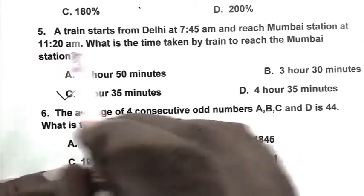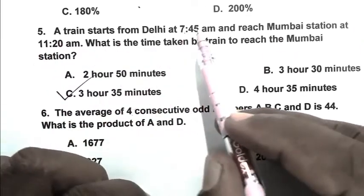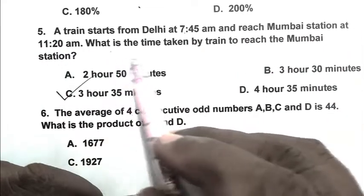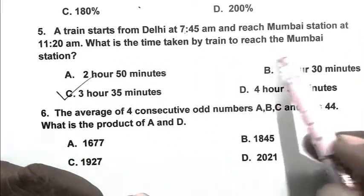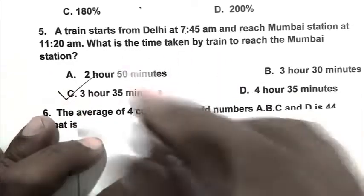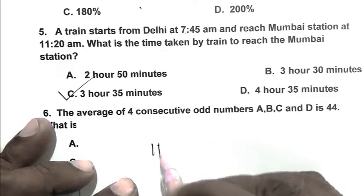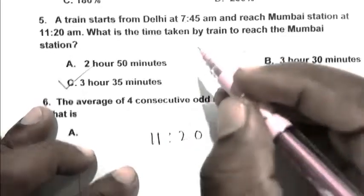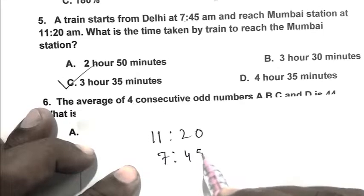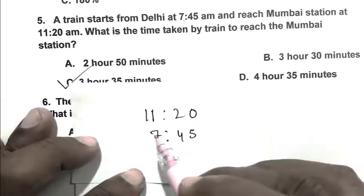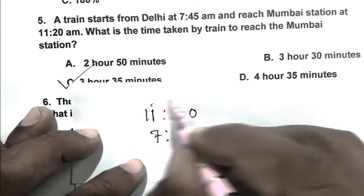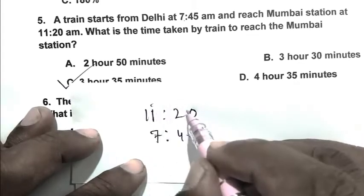Question number 5. A train starts from Delhi at 7:45 AM and reaches Mumbai station at 11:20 AM. What is the time taken by the train to reach Mumbai station? The train reaches Mumbai station at 11:20 AM and starts at 7:45 AM, so we have to subtract 7:45 from 11:20.